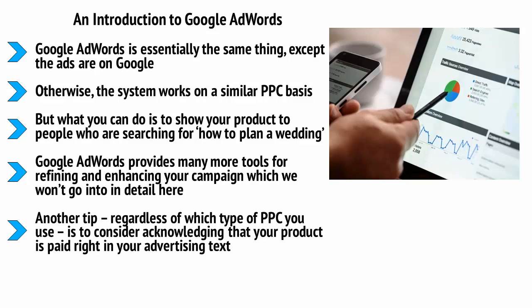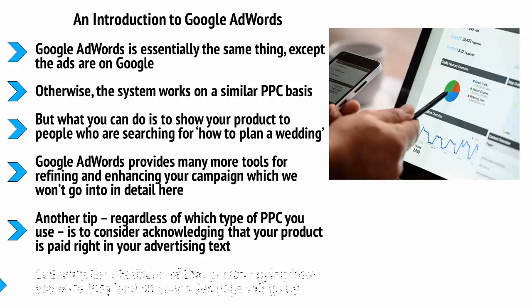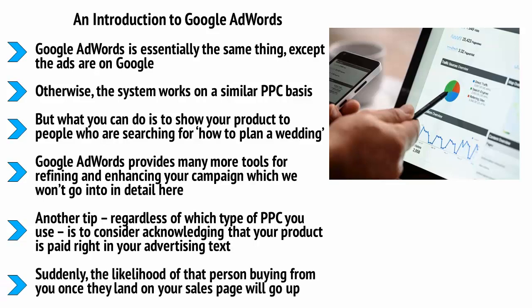Another tip: regardless of which type of PPC you use, consider acknowledging that your product is paid right in your advertising text. You can even include the price by saying '$30 e-book on wedding planning.' You will prevent people from clicking the ad unless they're willing, at least in theory, to pay that much for an e-book. Suddenly, the likelihood of that person buying from you once they land on your sales page will go up significantly, and as such you should be earning a lot more.